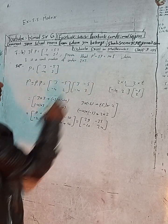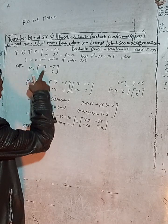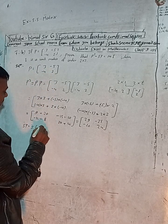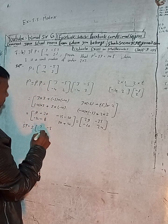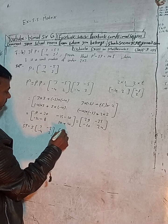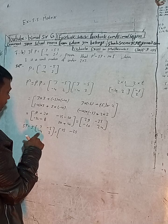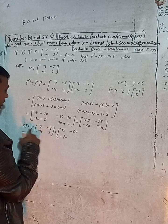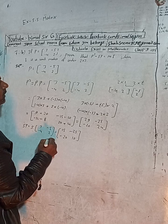So P² = [29, -25; -20, 24]. Now compute 5P: multiply 5 inside P = [3, -5; -4, 2]. So 5×3 = 15, 5×(-5) = -25, 5×(-4) = -20, 5×2 = 10. Therefore 5P = [15, -25; -20, 10].